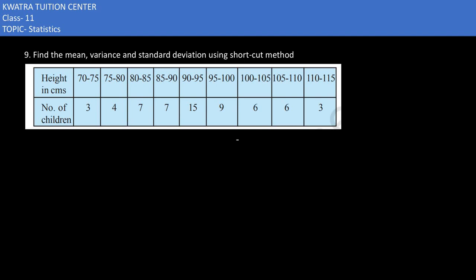In the ninth part of this problem, it says find the mean, variance, and standard deviation using the shortcut method. The shortcut method we have used is the assumed mean method. So first of all, don't forget x_i - this data, because the value is important for us.